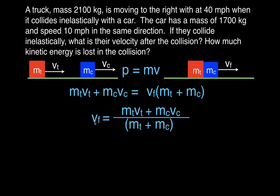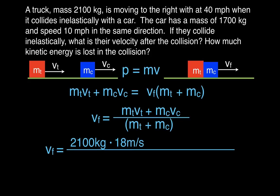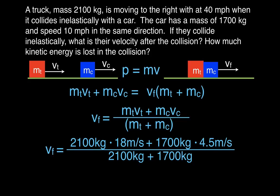Everything we need is given, so we can just plug in the values. The mass of the truck is 2,100 kilograms, moving to the right at 40 miles per hour, which is about 18 meters per second. We add the momentum of the car: mass of 1,700 kilograms traveling at 10 miles per hour, which is about 4.5 meters per second. We divide by the mass of the truck plus the mass of the car. Doing that, we find the final velocity of the two objects after they collide inelastically and move off to the right is about 12 meters per second.